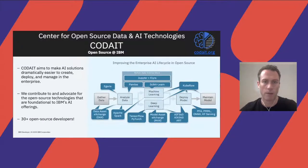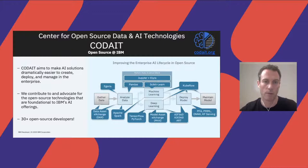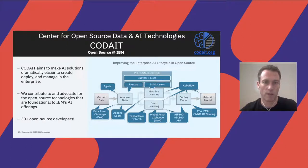A little bit about CODAIT, the Center for Open Source Data and AI Technologies. We're a team of over 30 open source developers within IBM, and we work on contributing to and advocating for open source projects foundational to IBM's data and AI product offerings. This includes the Python data science stack, Apache Spark, open exchanges for data and deep learning models, deep learning frameworks including TensorFlow and PyTorch, Kubeflow, AI fairness and ethics, as well as open standards for model deployment.